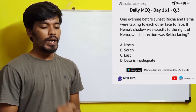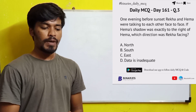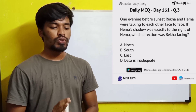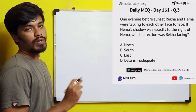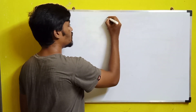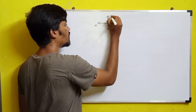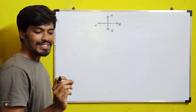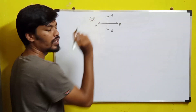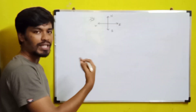The last question: One evening before sunset, Rekha and Hema were talking to each other face to face. If Hema's shadow was exactly to the right of Hema, which direction was Rekha facing? Since it is evening before sunset, we first mark the directions — east, west, north and south. Sunset means the sun will be on the west side. So the shadow will always be on the opposite side — west sun means shadow will be on the east side.